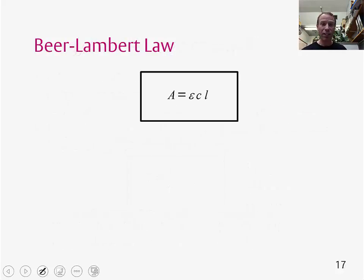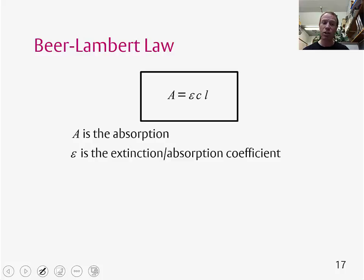So we've talked about population of energy levels. Let's now move on to the Beer-Lambert law. This one may already be familiar to you. So we have the absorption, A, is equal to the extinction coefficient multiplied by the concentration multiplied by the path length.